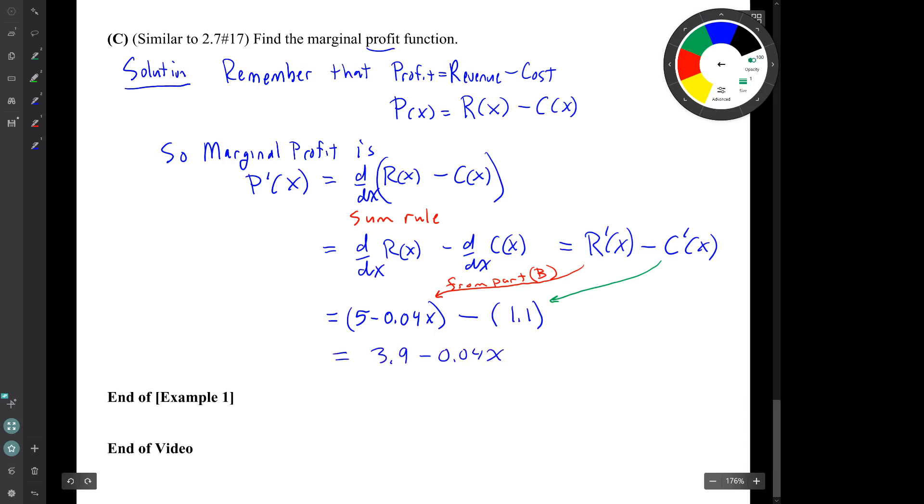So our result is that the marginal profit is denoted capital P prime. And it's this quantity, 3.9 minus 0.04x. We should be careful and make sure that our capital P's really look like capital letters. I'm going to put a little foot on my capital P's. The reason is that soon we will be introduced to what will be called the price function. And it will be denoted by a small letter P. So it's going to be very important to keep our capital P's distinct from our small p's.